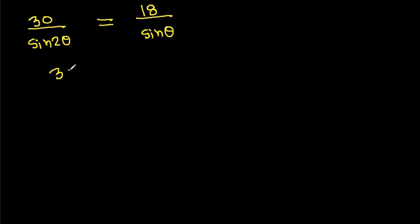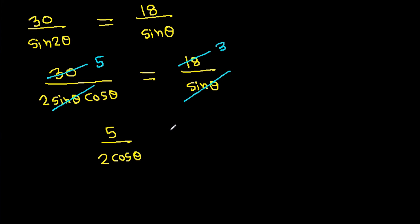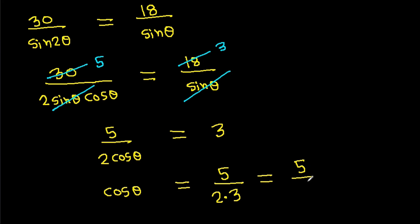We have 30 divided by sin(2 theta), where sin(2 theta) is 2 sin theta cos theta, equals 18 divided by sin theta. The sin theta terms cancel, giving 30 divided by (2 cos theta) equals 18. So 5 divided by (2 cos theta) equals 3, which means cos theta equals 5 over 6.